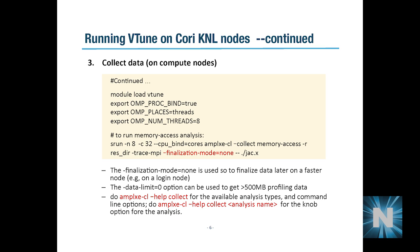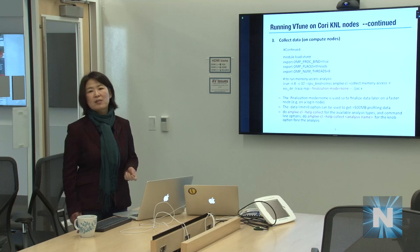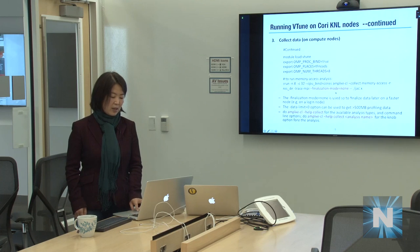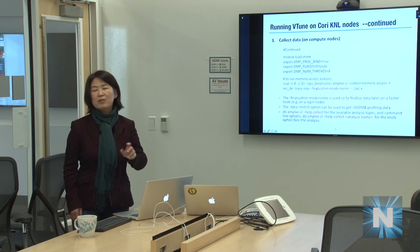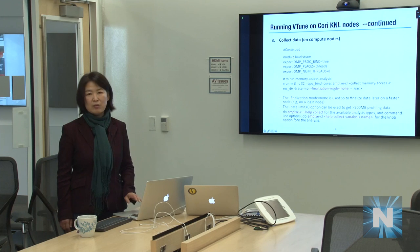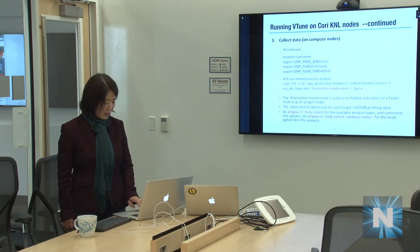A tip for data collection: by default VTune automatically finalizes data after collection, processing it before the job exits. We recommend adding --finalization-mode=none to skip post-processing on the compute node. The reason is that single-thread speed on KNL is much slower than a login node, so deferring finalization saves significant time. Just collect the raw data on the compute node and finalize it later outside the batch job.